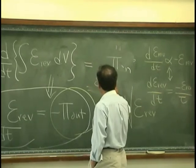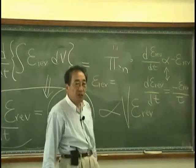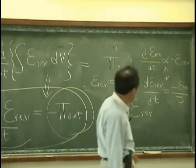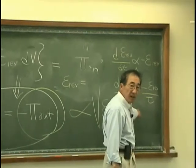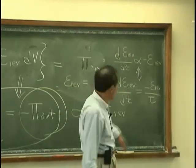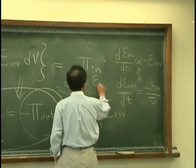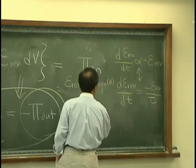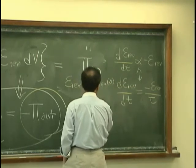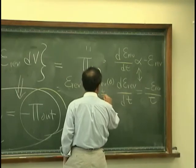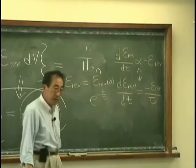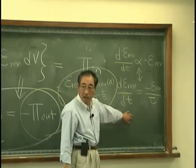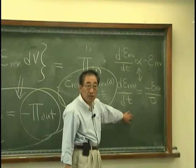Then the energy density inside of the revolver room, we can solve this, right? is simply e revolve in the beginning and then exponential minus t over tau. But that will satisfy this differential equation.